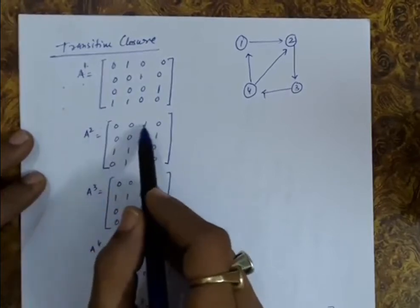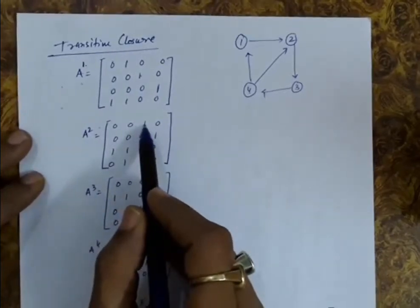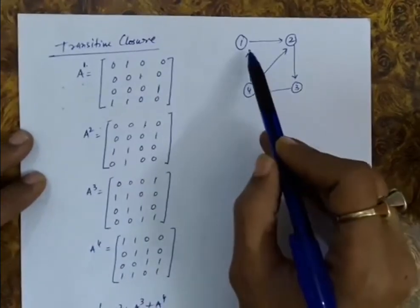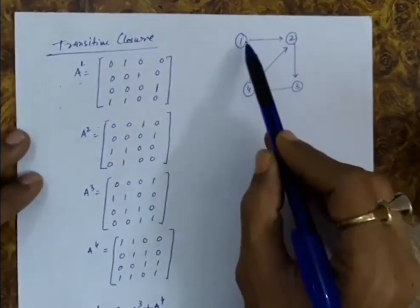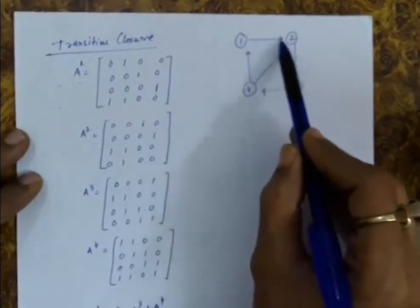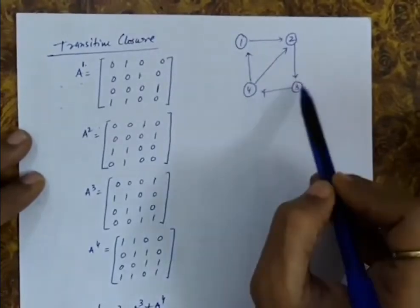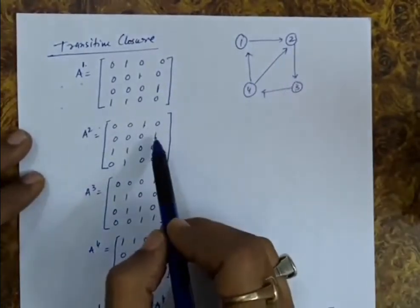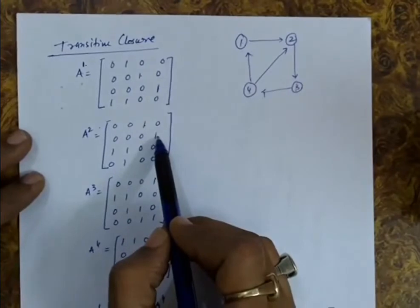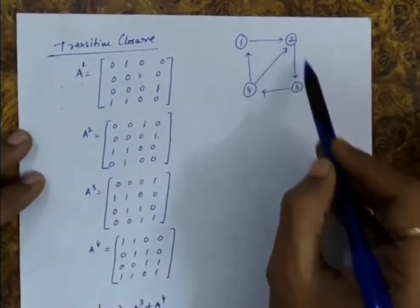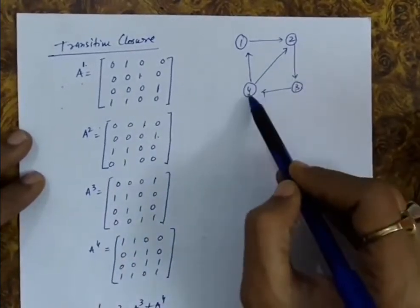A squared shows that the entry 1 to 3 is 1, meaning there is a length-2 path from 1 to 3. Let us verify: from 1 to 2 and then 2 to 3, the path length is 2. Similarly, the entry 2 to 4 represents the path 2 to 3 and then 3 to 4, which is also a length-2 path.